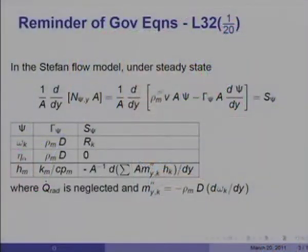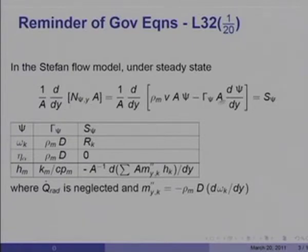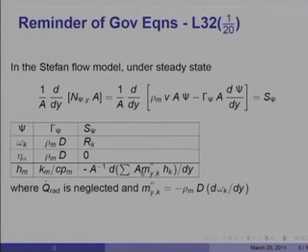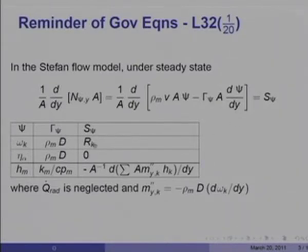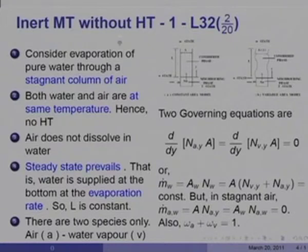As you will recall under steady state, the mass transfer equation would be something like N·ψ·∂(y_A)/∂y = ... where ψ can stand for mass fraction, element mass fraction, or enthalpy. The radiation term is neglected in this energy equation, and m-dot-double-prime·y_k is the diffusion mass flux. These are the source terms in each of these equations; r_k would be finite when there is a chemical reaction, if not it will be zero. Let us consider the first type: inert mass transfer without heat transfer.